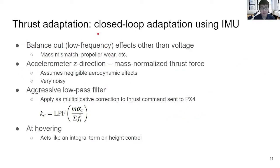In addition to open-loop thrust adaptation, we also propose closed-loop adaptation of the thrust using IMU measurements. The reason is to balance out effects other than voltage, such as mass mismatch and propeller wear. We assume that the accelerometer's z-direction measurements measure the mass-normalized thrust force by assuming negligible aerodynamic effects. Because the accelerometer measurements are very noisy, we apply an aggressive low-pass filter to the ratio of the accelerometer's z-direction to the normalized thrust.